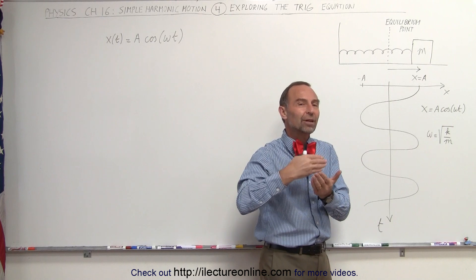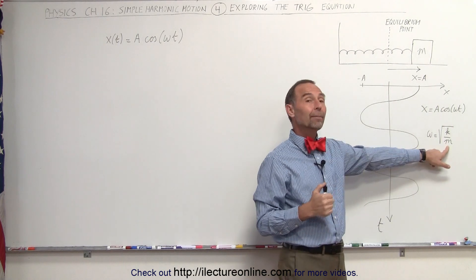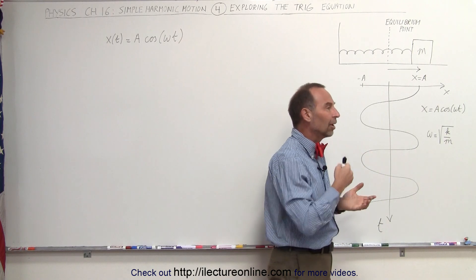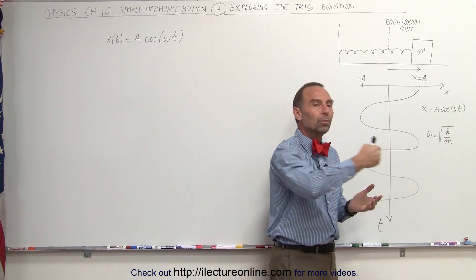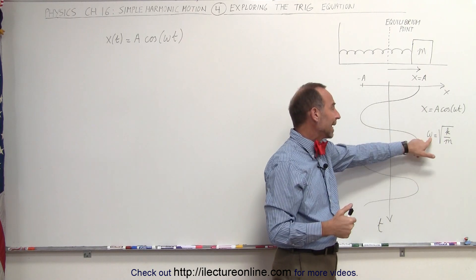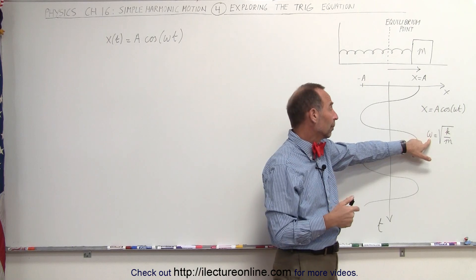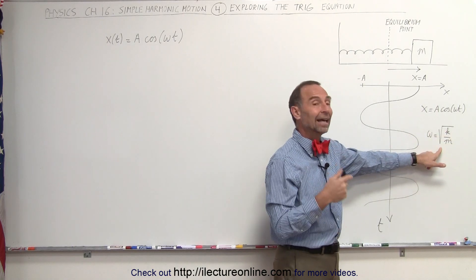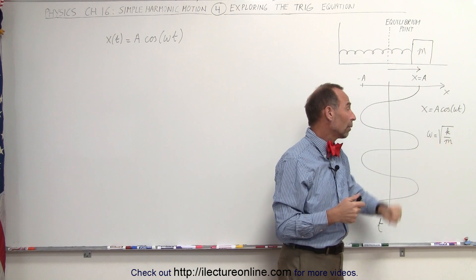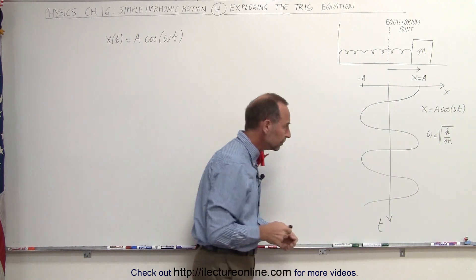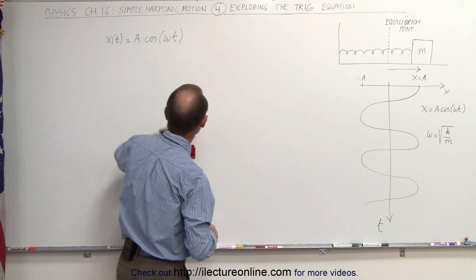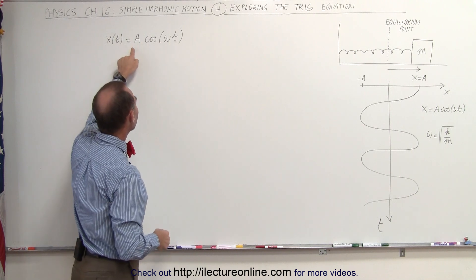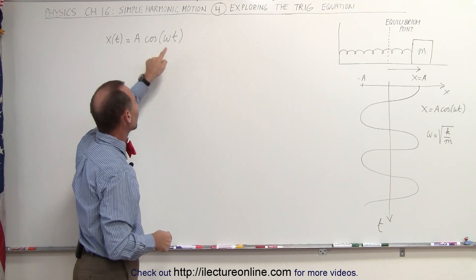The bigger the mass, the more difficult it will be, because the more inertia the block has, the slower the block will go back and forth. So the angular frequency is proportional to the square root of the spring constant and inversely related to the square root of the mass. The equation x as a function of time can be written as a times the cosine of omega t.